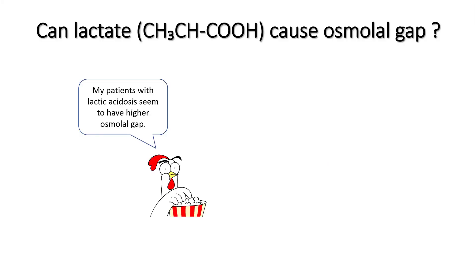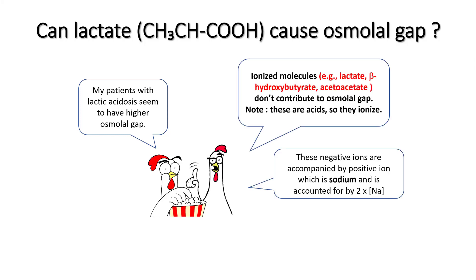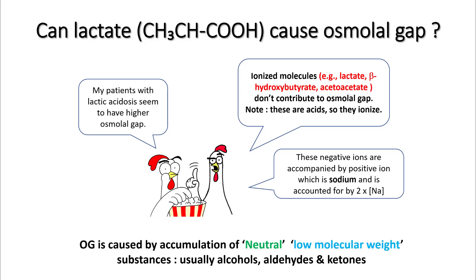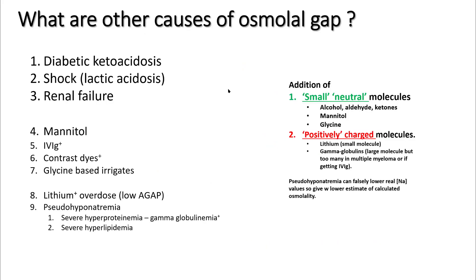Patients in the ICU with lactic acidosis can have a higher osmolal gap. However, ionized molecules such as lactic acid do not contribute to the osmolal gap, because they ionize into negative ions and their accompanying positive ion — sodium — is already accounted for when you use 2 × sodium. Other causes of increased osmolal gap include diabetic ketoacidosis, shock, and renal failure. Addition of positively charged molecules such as IVIG, contrast dyes, lithium, or hypergammaglobulinemia can also increase osmolal gap.